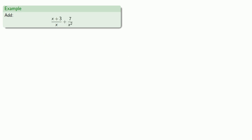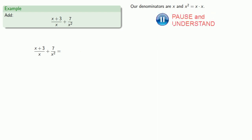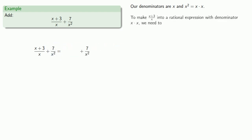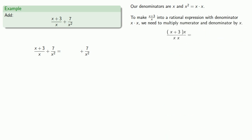Or we could add x plus 3 over x plus 7 over x squared. Our denominators are x and x squared, also known as x times x. And so that means both of these can be changed into fractions with denominators of x squared. 7 over x squared stays as 7 over x squared. To make x plus 3 over x into a rational expression with denominator x squared, we need to multiply numerator and denominator by x.